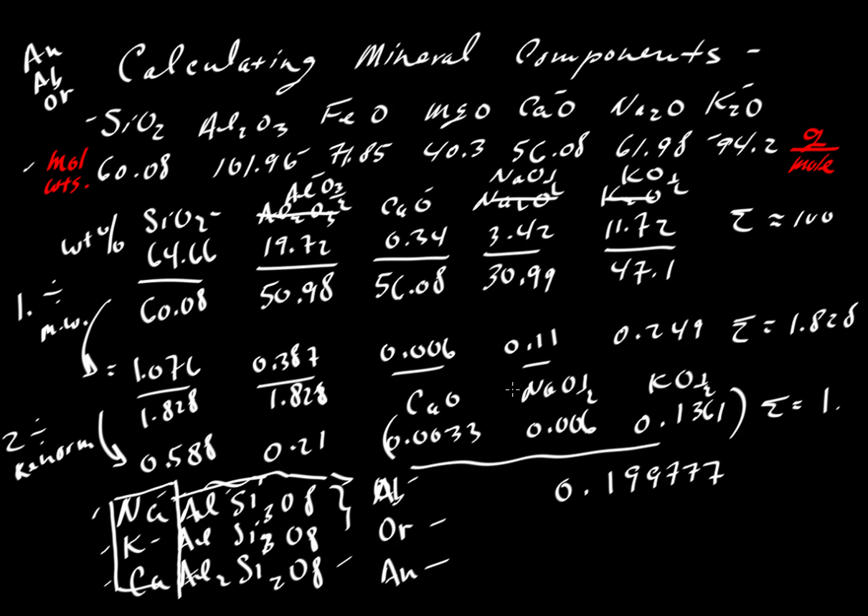We're going to carry these numbers over to our next chalkboard. The anorthite component will be the amount of calcium relative to the total amount of calcium plus sodium plus potassium. This is why we only wanted one cation each when we looked at those cation fractions. So this would be 0.0033 divided by 0.1998, which is equal to about 0.02.